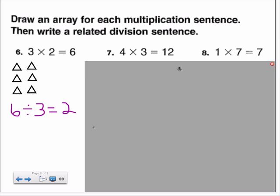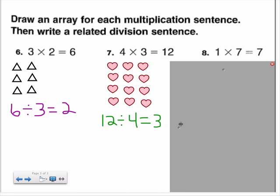Let's practice that again. This next example gives us the multiplication number sentence four times three equals twelve. I know I will need twelve counters in all for my array. The first factor, four, tells me that I will need four rows of counters. And the second factor, three, tells me that I will need three counters in each row. I chose to use hearts in my array for this example. Notice that I have four rows of hearts, with three hearts in each row.